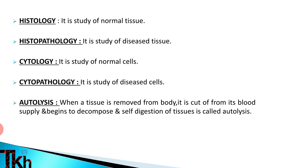The first definition is histology — it is the study of normal tissue. The next definition is histopathology — it is the study of diseased tissue. So any normal tissue study of our body is histology, and if someone has abnormal or diseased tissue, that is histopathology. The next definition is cytopathology — it is the study of diseased cells.